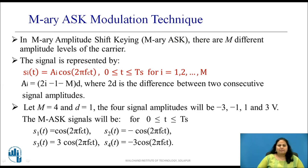Let us see M-Ary ASK modulation technique. In M-Ary amplitude shift keying (M-Ary ASK), M different amplitude levels of the carrier are used. This signal can be represented by the expression Si(t) equals Ai cos(2πfct), present for one symbol duration, for i equal to 1 to M. Consider for example the signal for M equal to 4 and D equal to 1. Then the four amplitude levels will be minus 3, minus 1, 1, and 3 volts.